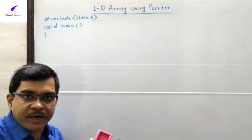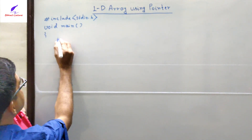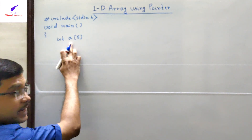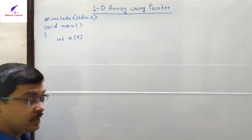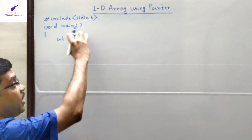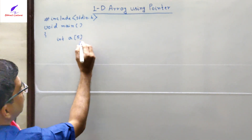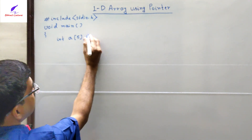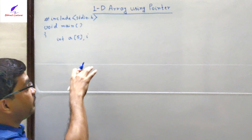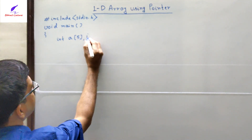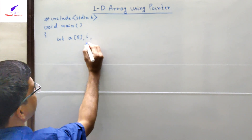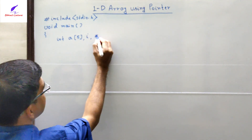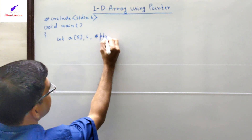The return type of the function is void, so it will not return any value. First we have to declare a 1D array: int a[5]. That means we have declared an integer array 'a' with size 5, which can contain a maximum of 5 integer values. We also need a loop variable 'i' to track the elements. Now we are declaring an integer pointer using the asterisk symbol.